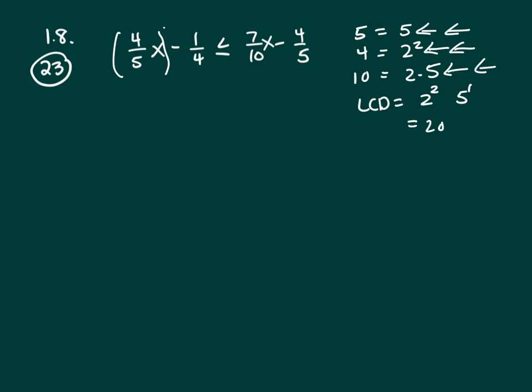And you want to multiply every term by 20. Every term on both sides by 20. So 5 will go into 20 4 times. That's 16x minus 5, less than or equal to 14x.